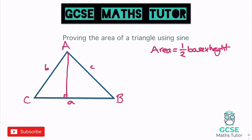The base is little a, so I can already write: area = ½a. All I need is an expression for the height. I'll call the height x and I have two options — using the left or right triangle. To keep in format with the familiar formula, I'll use angle C. In that right triangle, x is the opposite and b is the hypotenuse.